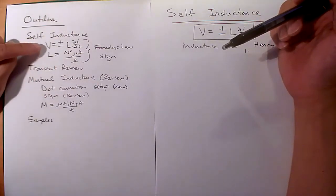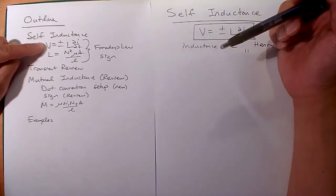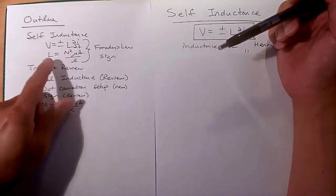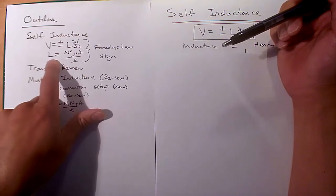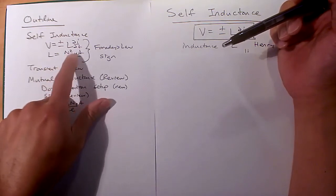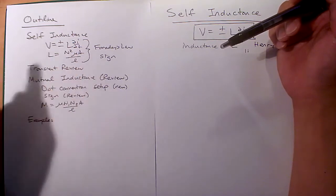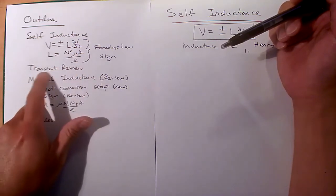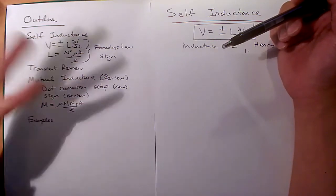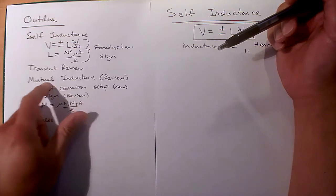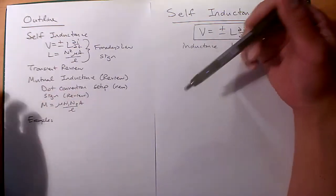We're going to look at our inductor equation, the self-inductance equation V equals plus or minus L·dI/dt. We'll look at how L is dependent on the number of turns squared, the permeability of the core, cross-sectional area, and the length. We'll look at a brief transient review just to recall how an inductor behaves when you give it a step voltage. And then we'll look at mutual inductance — we'll start our discussion on transformers.